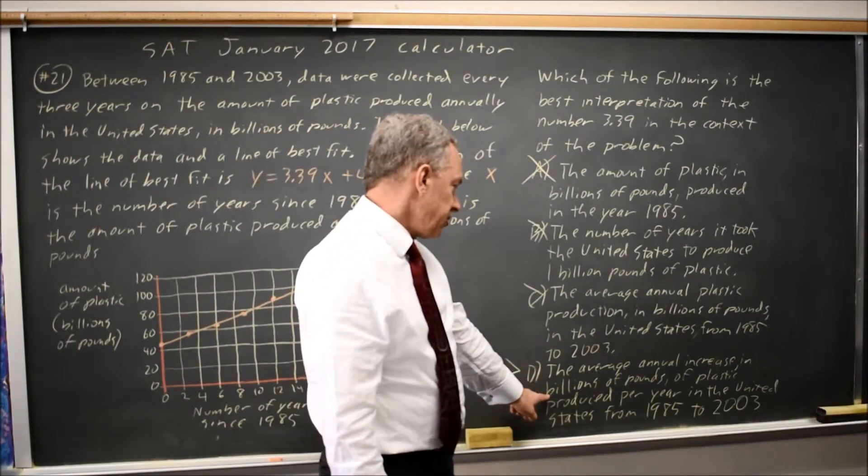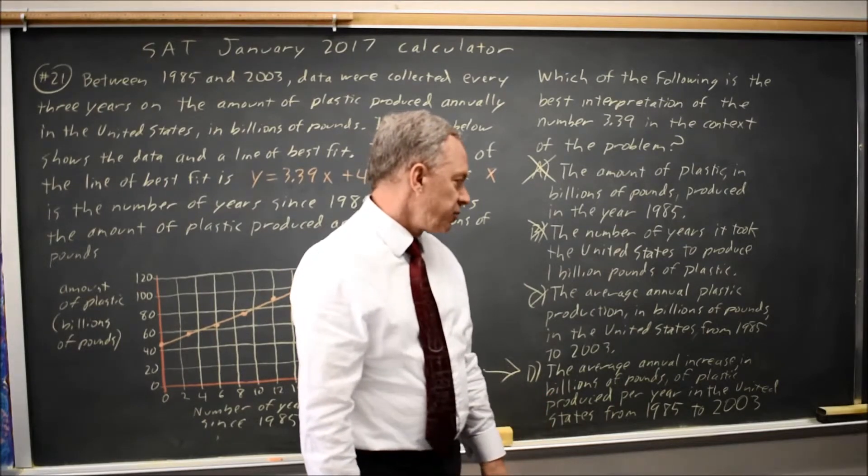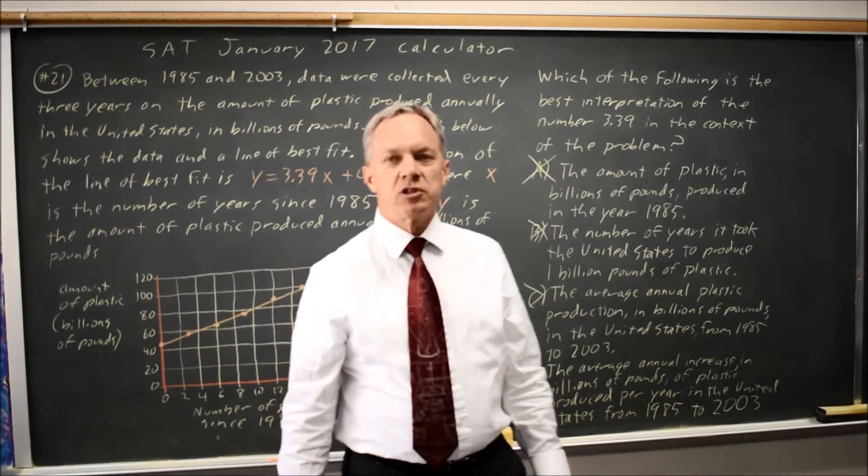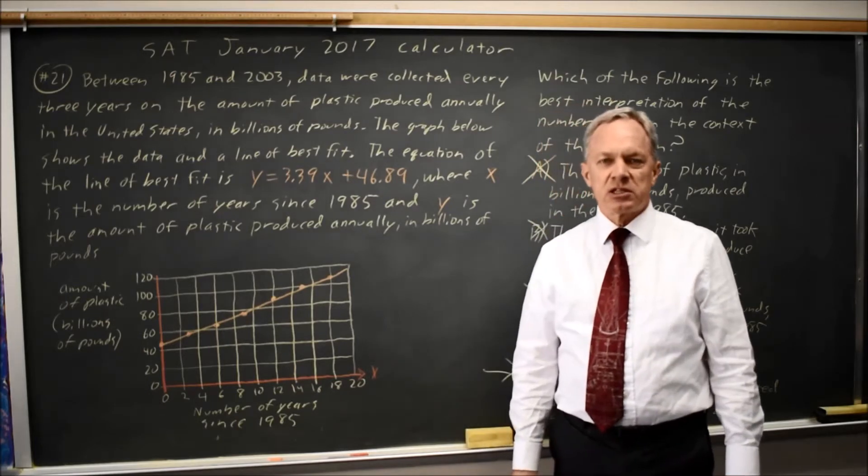And D says, average annual increase in billions of pounds of plastic produced per year in the United States from 1985 to 2003. So, that is a good description of slope. And 3.39 is the slope in the context of the problem. So, the answer would be D.